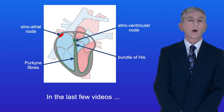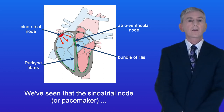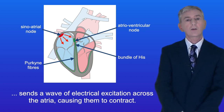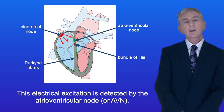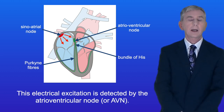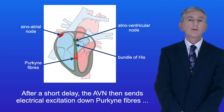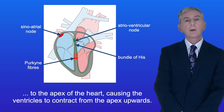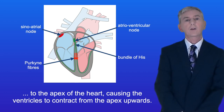In the last few videos we've been looking at what happens when the heart beats. We've seen that the sinoatrial node, or pacemaker, sends a wave of electrical excitation across the atria causing them to contract. This electrical excitation is detected by the atrioventricular node, or AVN. After a short delay, the AVN then sends electrical excitation down Purkinje fibers to the apex of the heart, causing the ventricles to contract from the apex upwards.